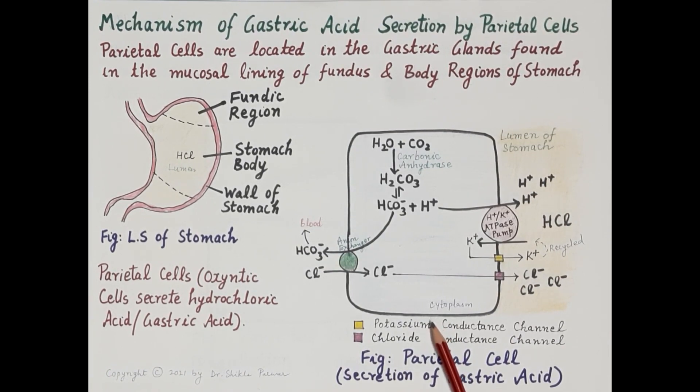This is, in brief, the mechanism by which parietal cells produce hydrochloric acid or gastric acid. If you find the video helpful, kindly like, subscribe, and share. Thanks for watching.